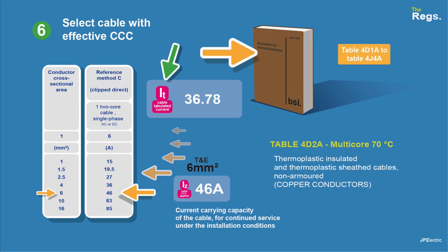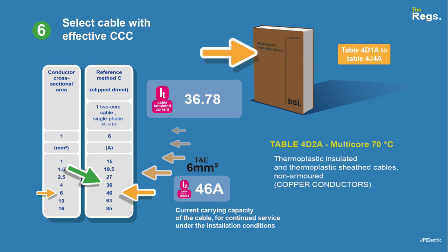With our IT of 36.78 amps, we need to find a cable that can carry that. There are many tables in BS 7671 depending on cable type and conductor type. We're going to use Table 4D2A — multicore 70 degrees C, thermoplastic insulated and thermoplastic sheathed cables. Looking through the table at reference method C, clipped direct, at 36.78 amps: 4mm² gives 36 amps — that's not sufficient. So 6mm² gives 46 amps, which is higher than 36.78. So we're going to use 6mm² cable. The current carrying capacity for continued service under installed conditions, that's your IZ, is 46 amps.